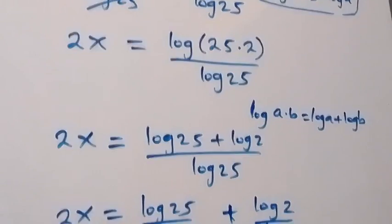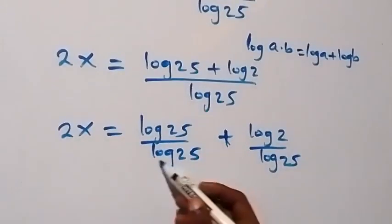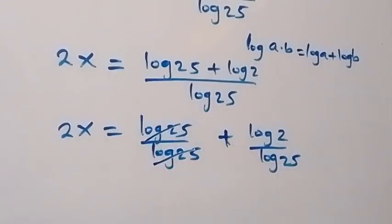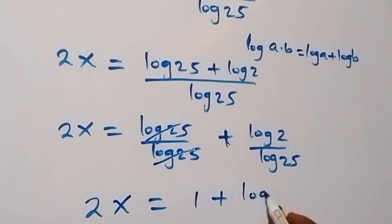From here log 25 cancels log 25, that's 1. So we have 2x equals 1 plus log 2 over log 25.